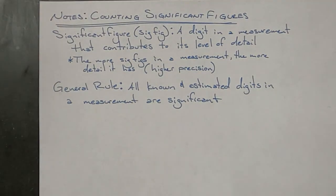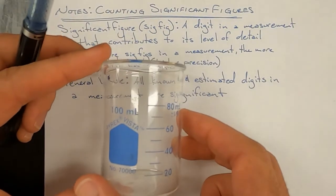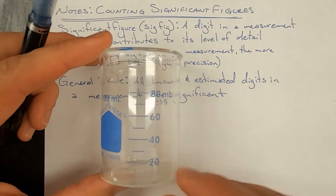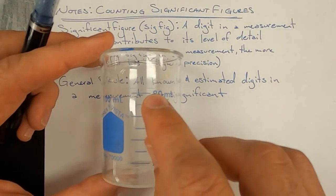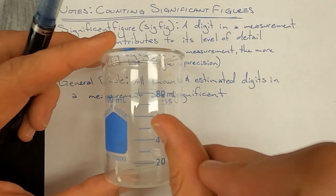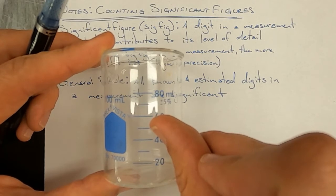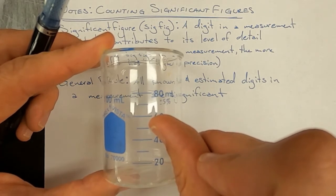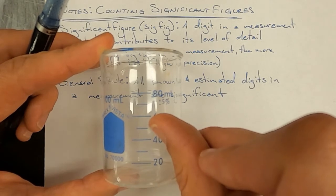We'll look at two different measuring tools that would both be measuring 50 milliliters of water. In a 100 milliliter beaker, each of the lines represents 10 milliliters. If the level of water were right on the 50 mL line, we could say it is 50 milliliters — the five in the tens place would be a known digit and the zero would be estimated.